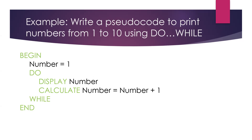The condition is checked at the end. Number starts at 1, do-block runs: display 1, then 1 plus 1 becomes 2. Check: is 2 less than or equal to 10? Yes — display 2, becomes 3, and so on. You print 10, then 10 plus 1 is 11; 11 is less than 10? No — exit the loop.